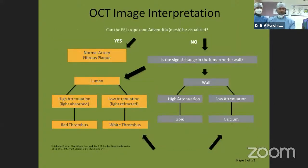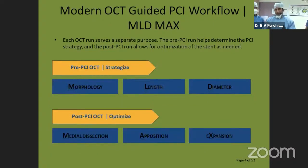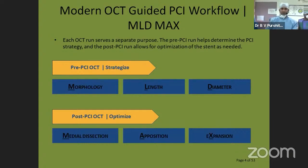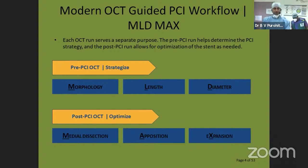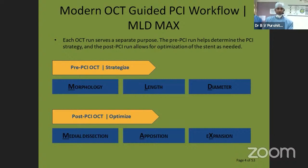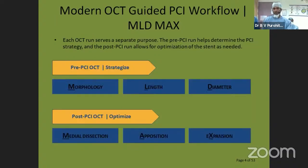Based on the lesion characteristic, when doing OCT, two important things to consider are the pre-PCI strategy and how to optimize stenting — the post-PCI strategy. These are given the name MLD max. MLD covers pre-PCI: assessing morphology, length, and diameter. Post-PCI, MAX stands for medial dissection, apposition, and proper stent expansion. Studies have shown this algorithm changed strategy in more than 70-80% of cases pre-PCI and in 20-30% post-PCI.